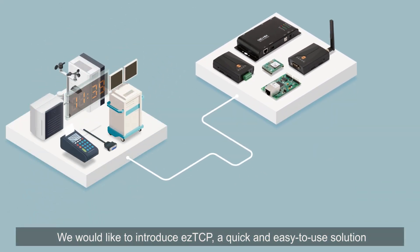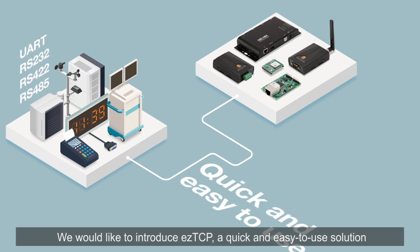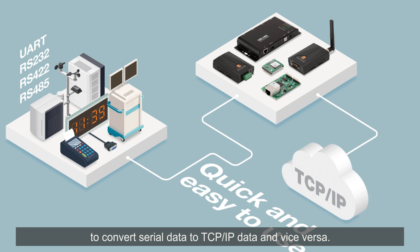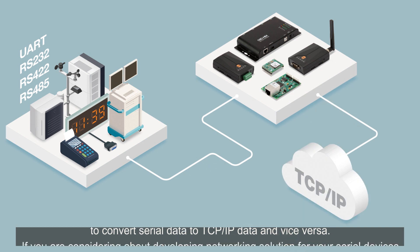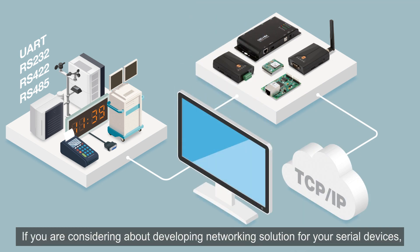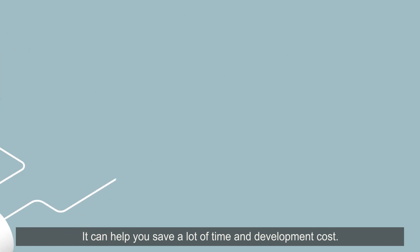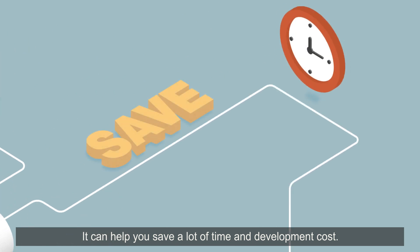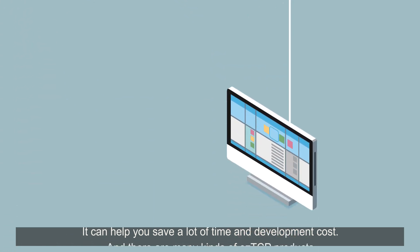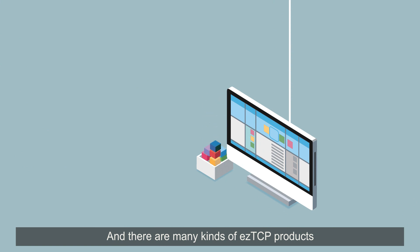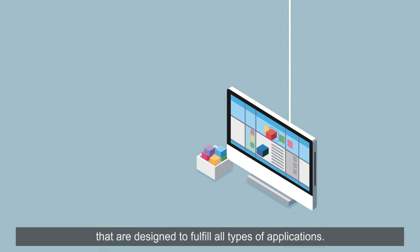Hello. We would like to introduce EasyTCP, a quick and easy to use solution to convert serial data to TCP/IP data and vice versa. If you're considering developing a networking solution for your serial devices, EasyTCP is the solution you need. It can help you save a lot of time and development cost, and there are many kinds of EasyTCP products designed to fulfill all types of applications.